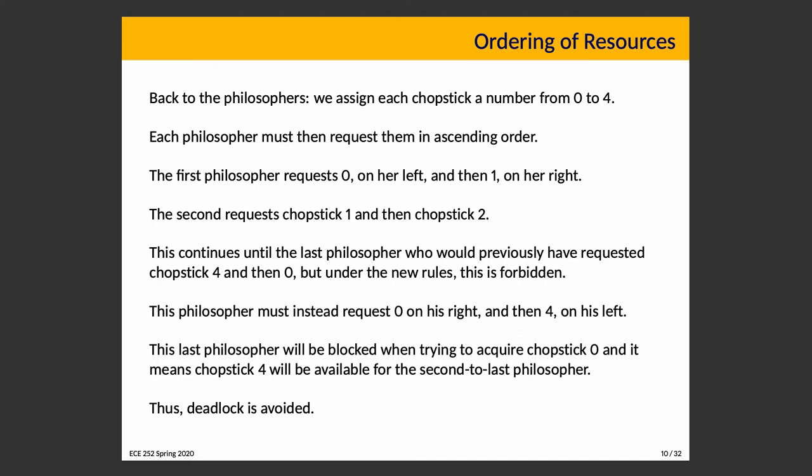Whatever happens with chopstick acquisition, everybody will have zero, one, or two chopsticks. If you are the philosopher with two, you can eat, put your chopsticks down, and they become available for others. You can't have the situation where everybody ends up with exactly one. Imagine philosopher one and philosopher five fighting over chopstick zero — one of them will win. If philosopher one wins, philosopher five is blocked and will not try to get chopstick four, meaning chopstick four is available for philosopher four, who can get it, eat, and the problem is solved.